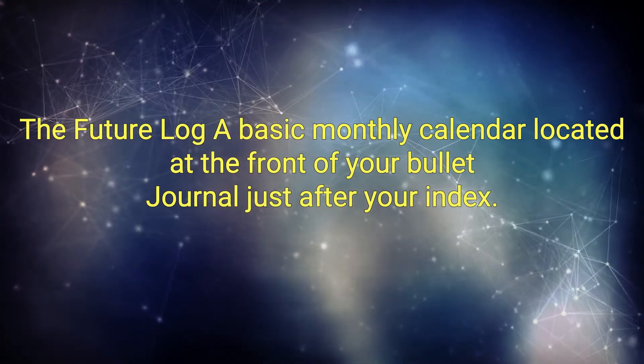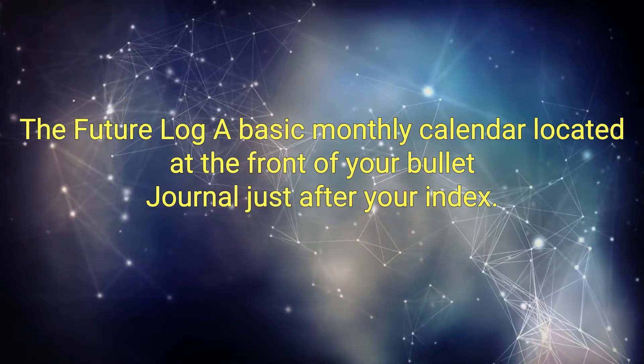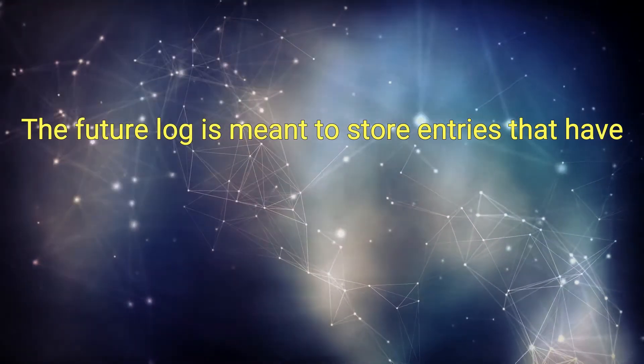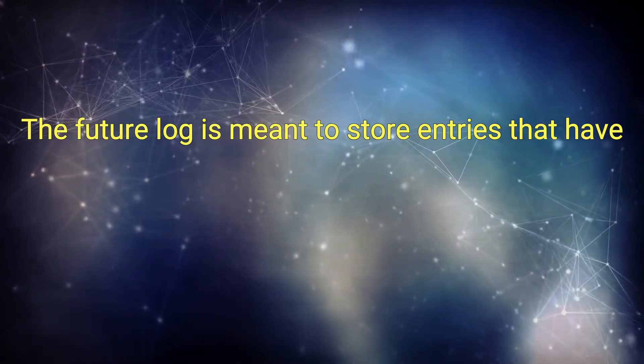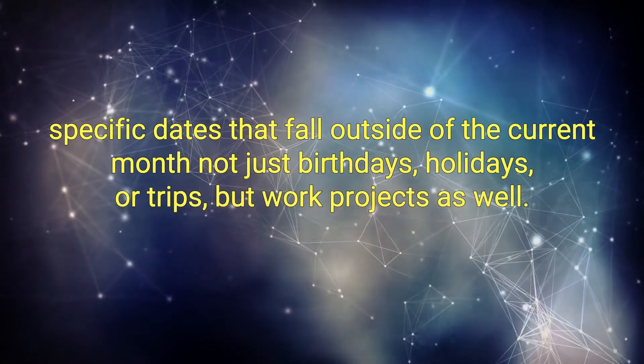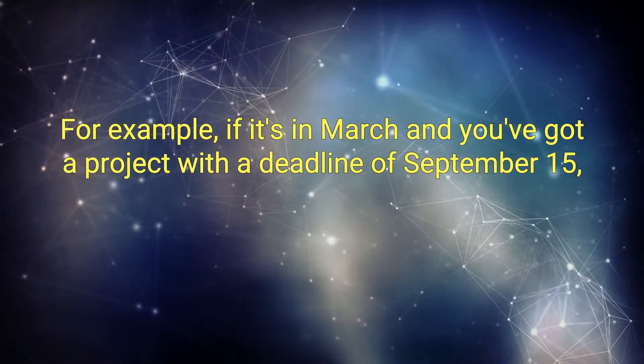The future log: a basic monthly calendar. Located at the front of your bullet journal, just after your index, the future log is meant to store entries that have specific dates that fall outside of the current month. Not just birthdays, holidays, or trips, but work projects as well.